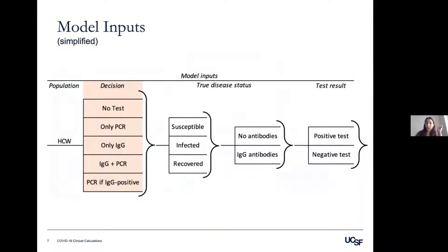Here you can see a simplified version of our model. We start by defining the population and choosing one of the five options. For these analyses, it works best to start with true disease status. We model the probability that a healthcare worker is susceptible, currently infected and infectious, or has recovered — meaning no viable transmissible virus remaining, not necessarily clinical recovery. Each arm further branches into having IgG antibodies or not. Finally, given each condition, we get either positive or negative test results, leading to our outputs.